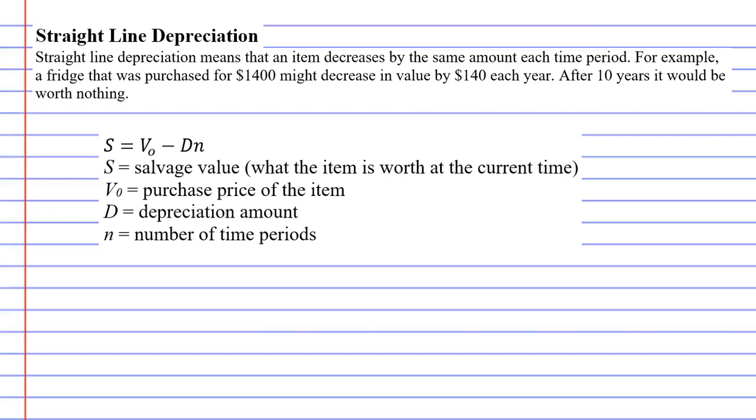Straight line depreciation. Now, straight line depreciation means that an item decreases by the same amount each time period. So for example, let's say we have a fridge and we buy it new for $1,400. And this fridge is going to decrease in value over time.